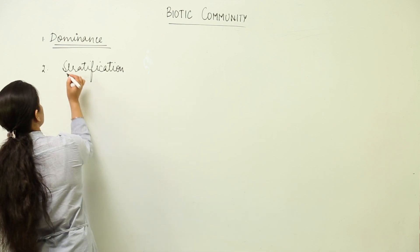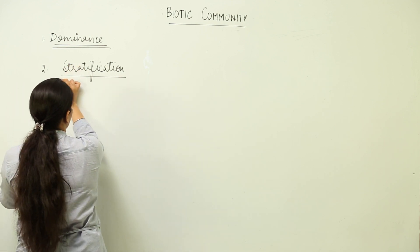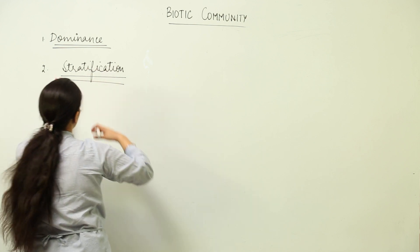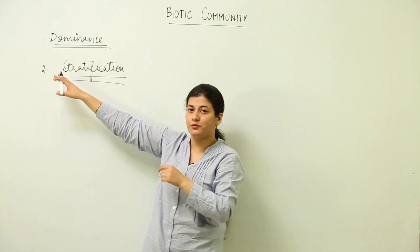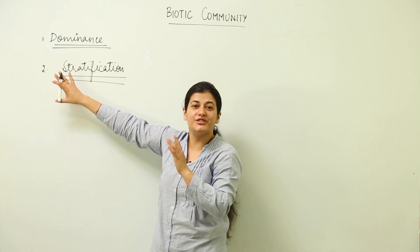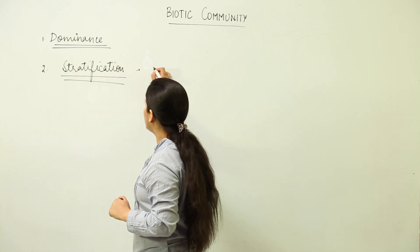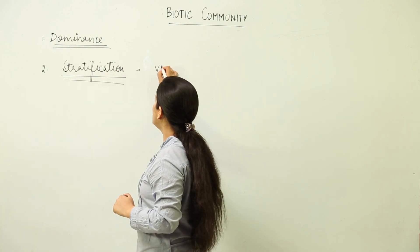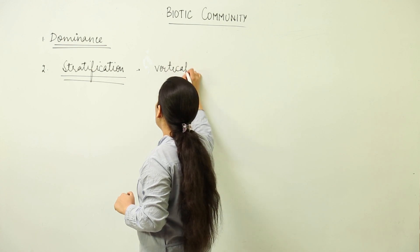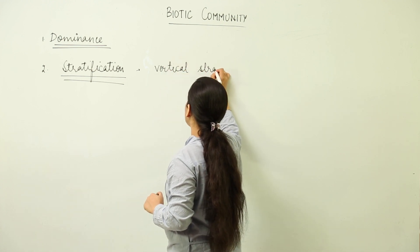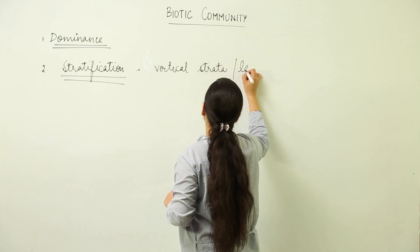Now we have the second characteristic to study, and that is stratification. Stratification means arranging the community in vertical strata, or you can say layers.